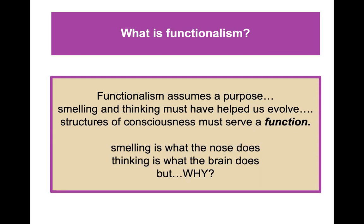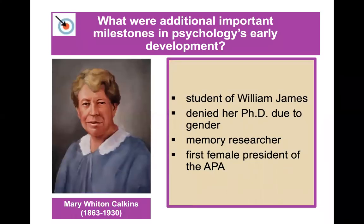Another important person in early psychology is Mary Whiton Calkins. She was a student of William James and brilliant, but she was denied her PhD because she was a woman. She met all the requirements — I believe she outscored all the males in her studies — but was not allowed to get a PhD from Harvard. They offered her one from Radcliffe and she said no thanks. She was a memory researcher and went on to become the first female president of the American Psychological Association.